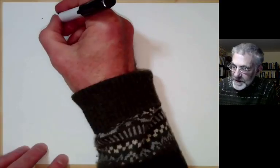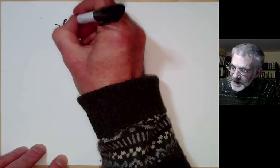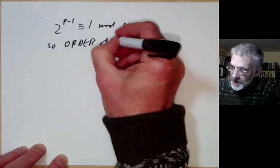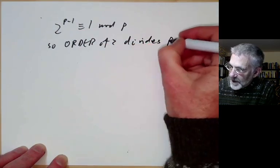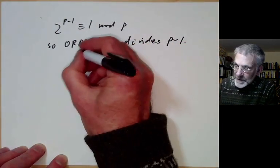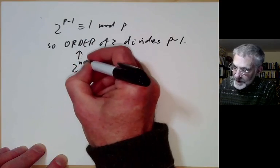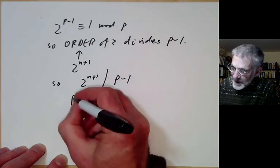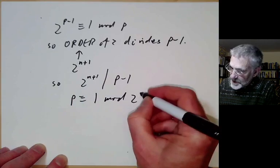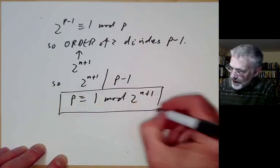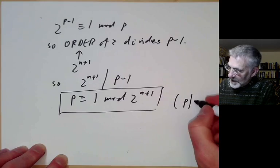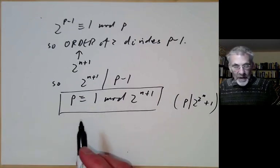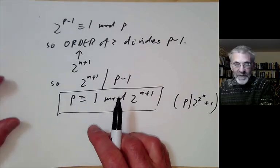We also know that 2 to the p minus 1 is congruent to 1 mod p by Fermat, so the order of 2 divides p minus 1. Since the order is 2^(n+1), we get 2^(n+1) divides p minus 1, so p must be congruent to 1 modulo 2^(n+1). This gives a very strong condition on possible prime factors of Fermat numbers.